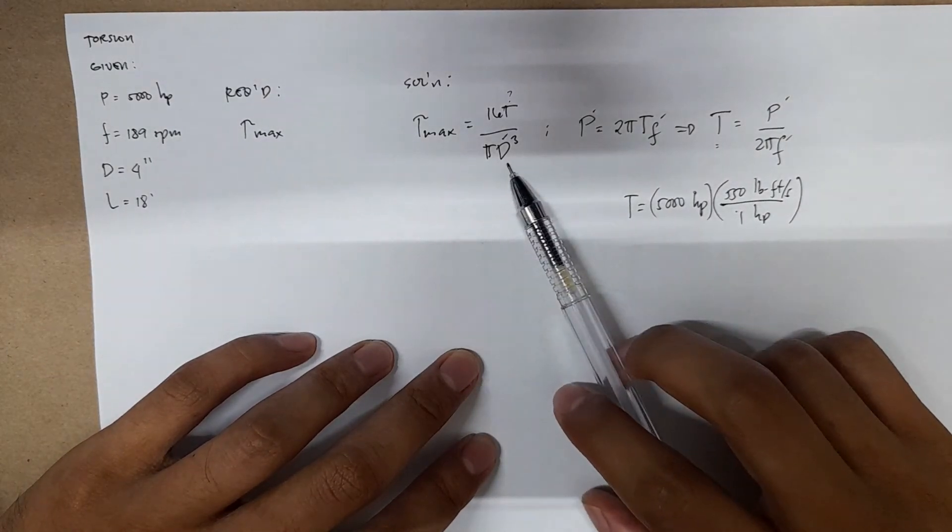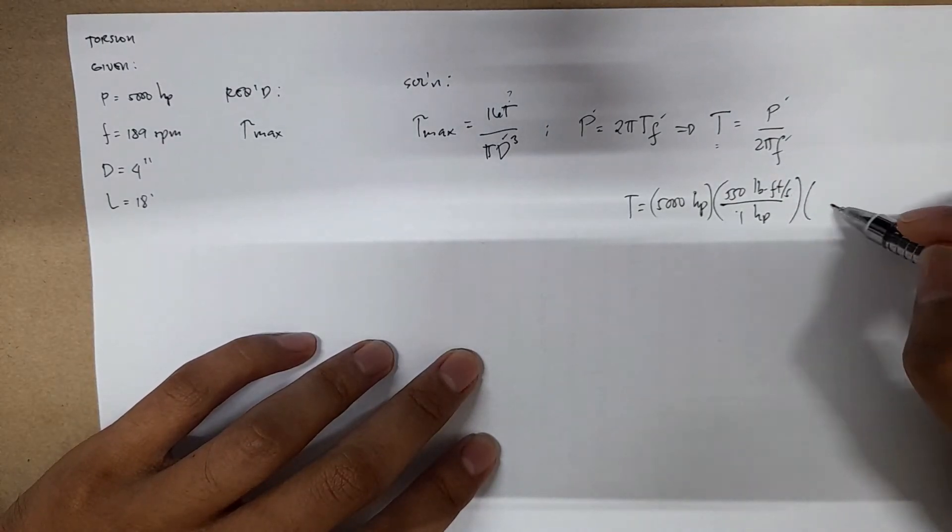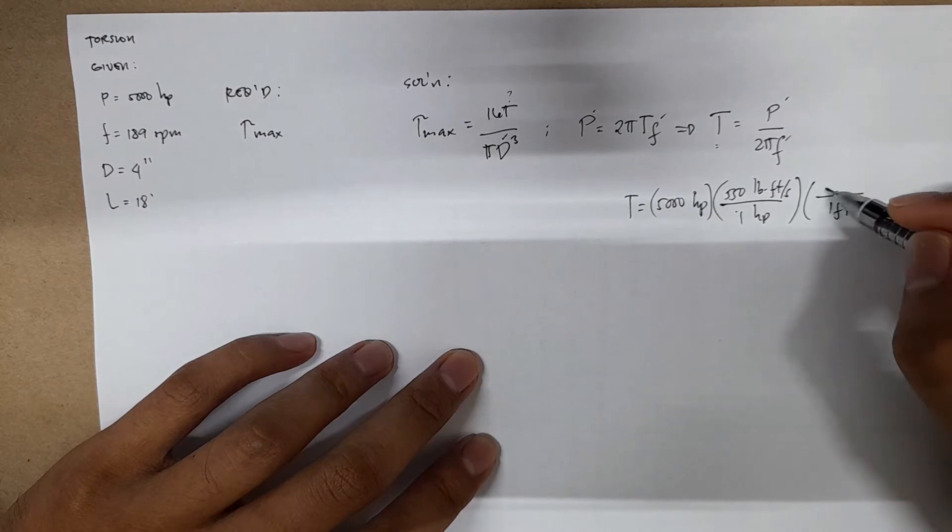Since our diameter is in inches, we also have to convert the feet into inches. So 1 foot equals 12 inches.